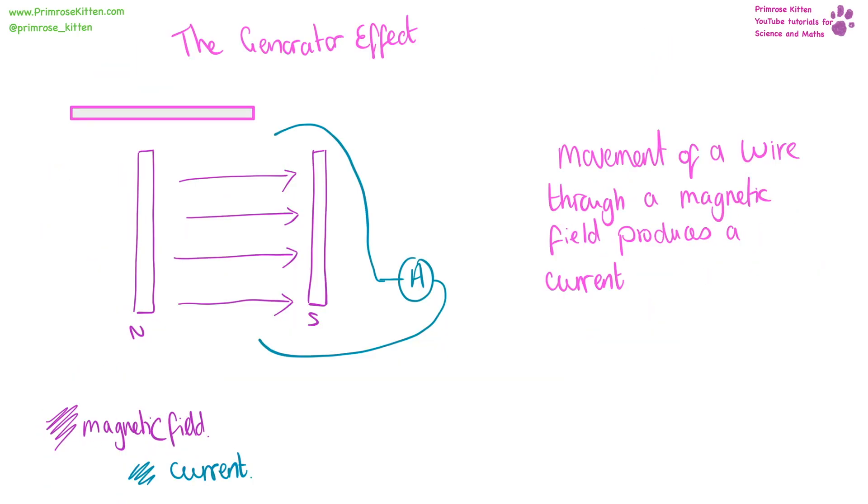The generator effect is just an extension of Fleming's left hand rule. When we have a wire and we move it through a magnetic field, we are going to be generating a current.